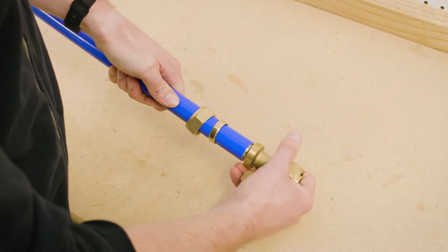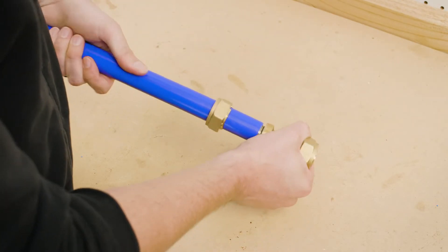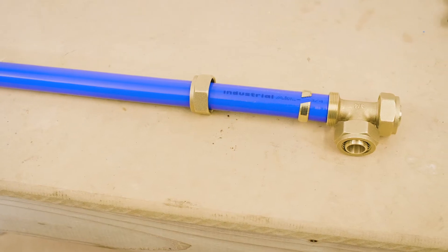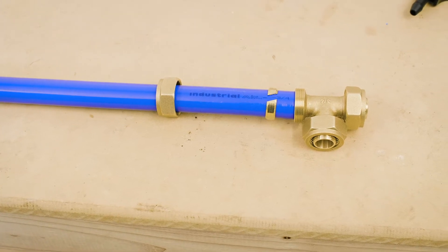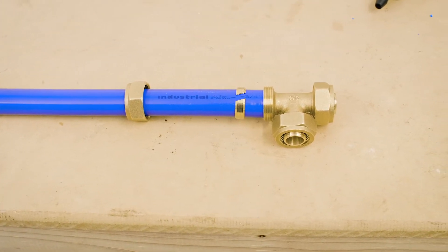Next, push the fitting onto the tube so that its shoulder is fully seated against the tube. Failing to do so can cause a leak or poorly connected assembly, which could disconnect when pressurized.